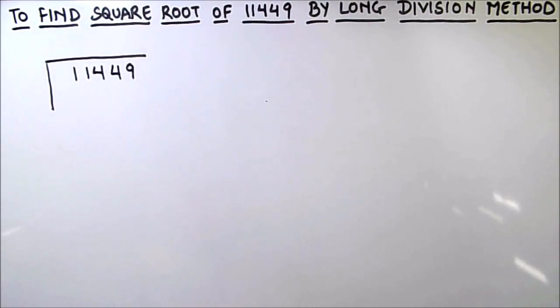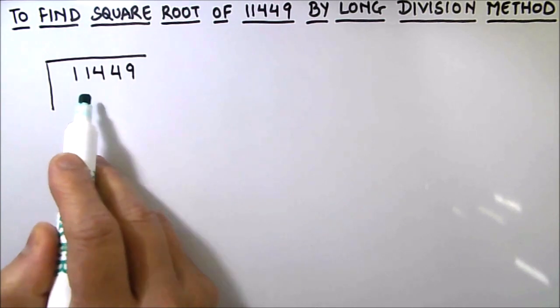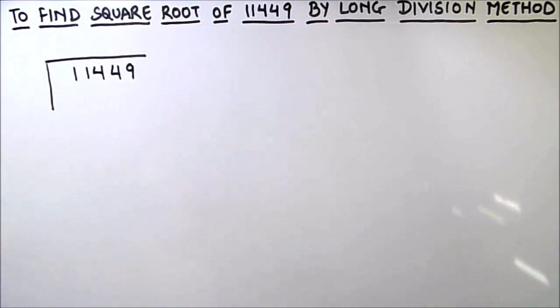Hello everyone, in this video we are going to learn how to find the square root of 11449 using the long division method. In this method, first we'll write the number like this, and the first step is to make the pairs of numbers starting from the units place.